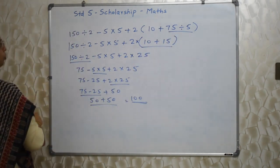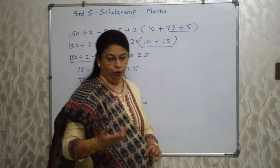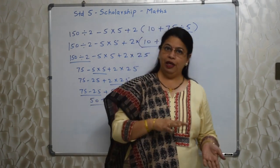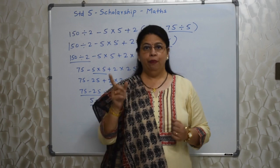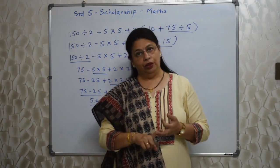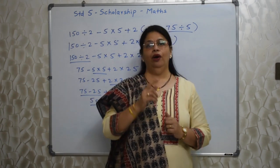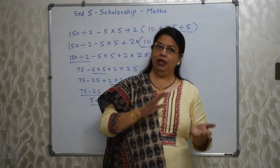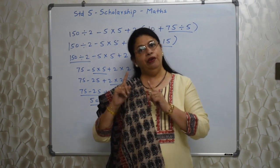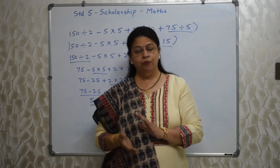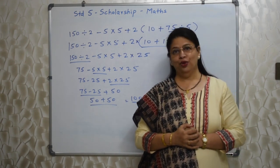Study this again. BODMAS is a very important rule whenever multiple operations — plus, minus, multiplication, bracket, division — are involved. Brackets come first. Then division and multiplication at the same level — whichever comes first from the left. Then addition and subtraction, again whichever comes first from the left. Division before multiplication is not always the rule.